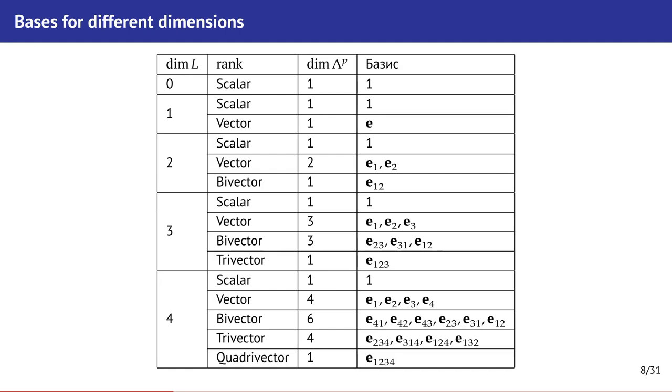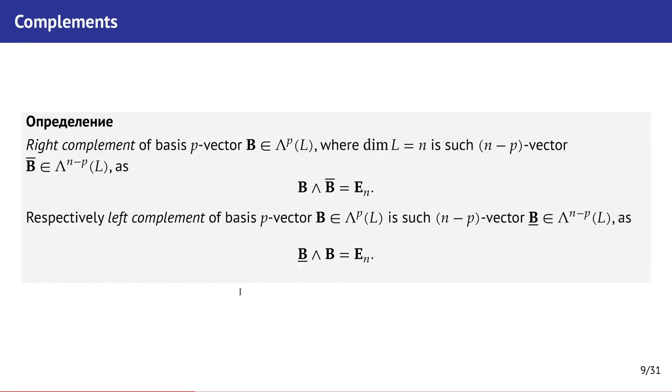Also beginning from third dimension there are at least two objects with the same rank: vector and bivector, vector and three-vector, and so on. We can also construct bijection from vector to bivector, from bivector to vector, from vector to three-vector and so on. This bijection can be constructed using right complement and left complement operations. These operations we will use later in our examples. They allow us to make such a bijection between two elements with the same number of components.